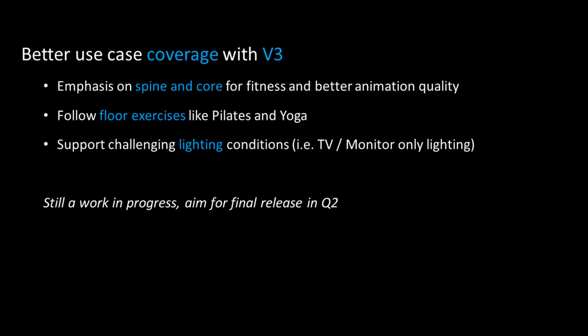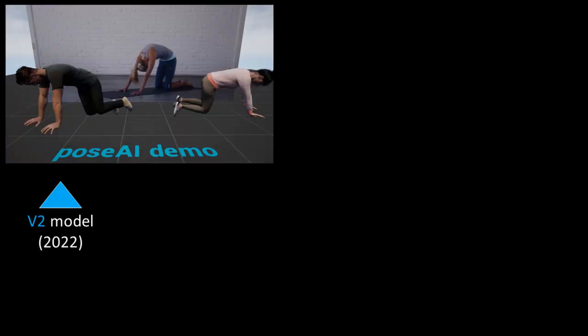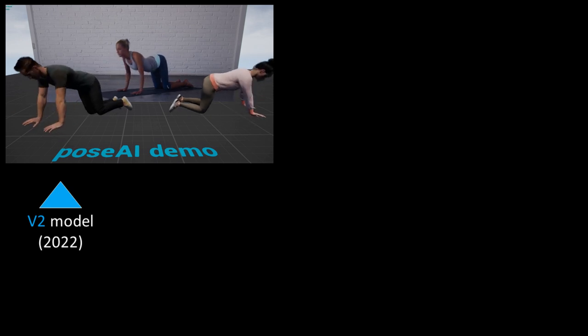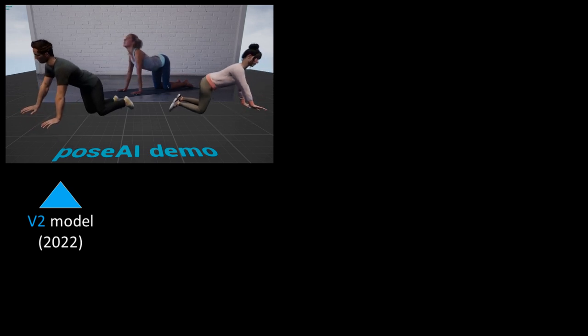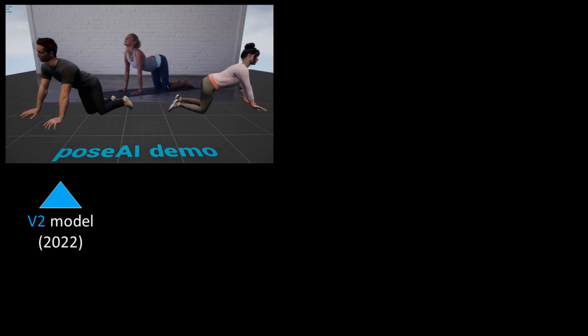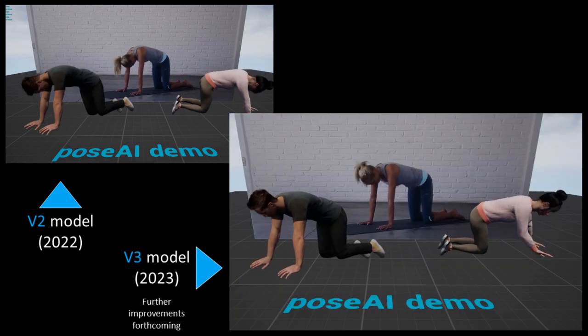and then adding coverage for floor exercises like yoga or Pilates. As we said last year, our version 2 model does really well for standing positions, but sometimes lost tracking on the floor. Here you can see the animation freezing, and the back is quite stiff.